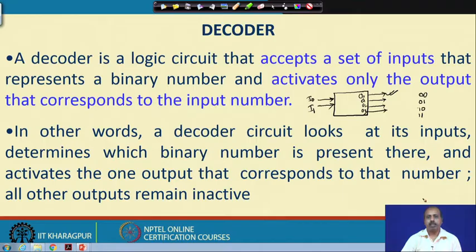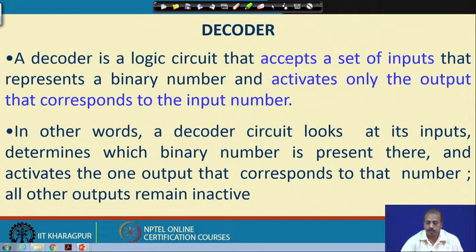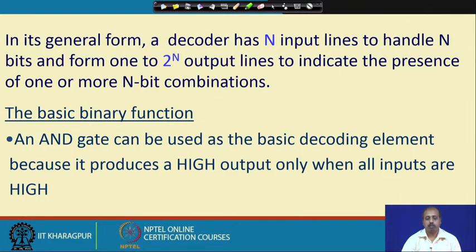You can very easily design such a circuit using basic logic gates, but if the function you want to realize is complex it may require a good number of gates. So we replace that with a decoder to make the design simpler. In general form, a decoder has n input lines to handle n bits and up to 2-power-n output lines to indicate the presence of one of the n-bit combinations. It is called an n-to-2^n decoder, where one of the 2^n outputs will be made active.